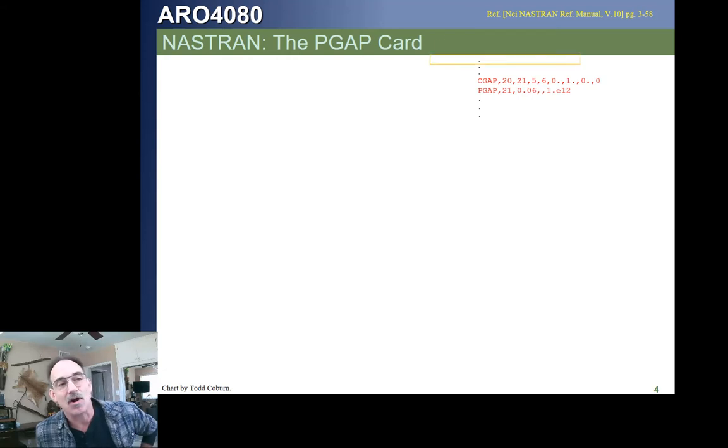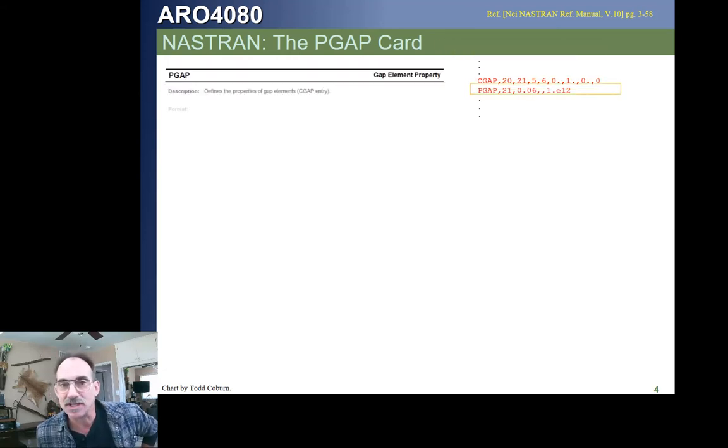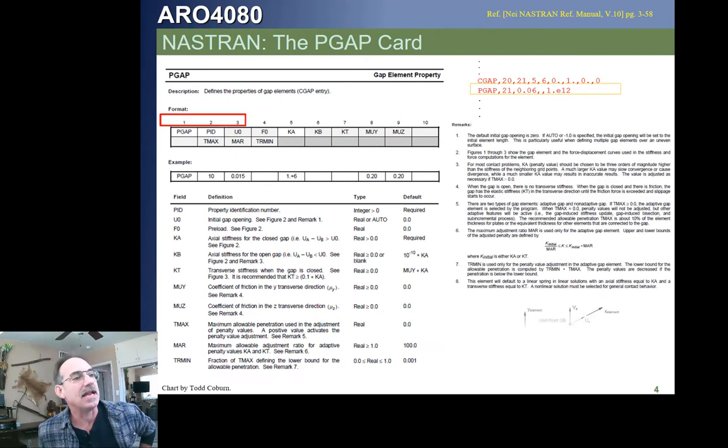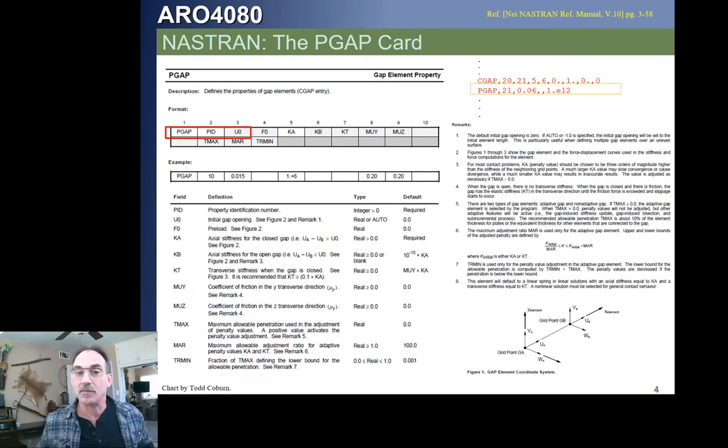Then we need the PGAP card to tell what this gap looks like and how it works. The PGAP card is going to have a property ID, which obviously needs to match the property ID coming from the CGAP card. And then we're going to put in, in this U0 field, we're going to put in an initial gap opening. So if there's a gap there,